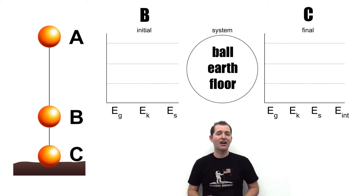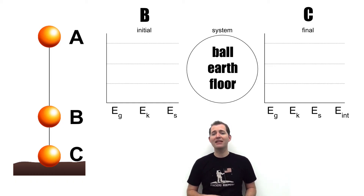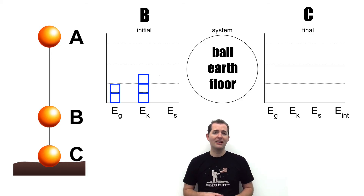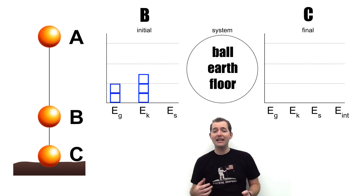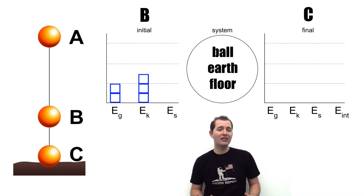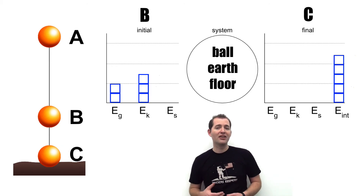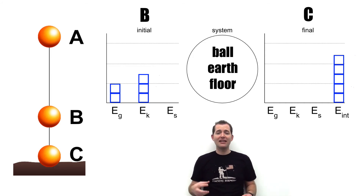Let's take a look at the scenario from Point B to Point C on a new LOL diagram. We start with the same standard format and the same types of energy. Our initial energy represents the object at Point B — the same energy as at the end of our previous LOL diagram: two units of gravitational potential energy and three units of kinetic energy, since the object is still off the ground and falling. At Point C, after the object has come to rest on the floor, there is no gravitational potential energy, no kinetic energy, and no spring energy. All five units of energy have been transferred to internal energy through heat or sound into the ball or floor. The total amount of energy present at the beginning is still present at the end of our scenario.